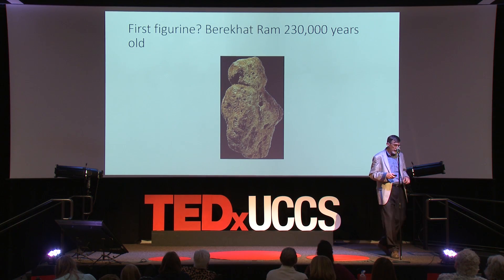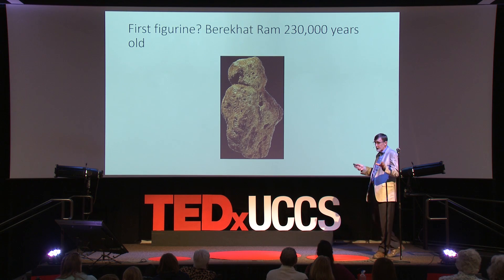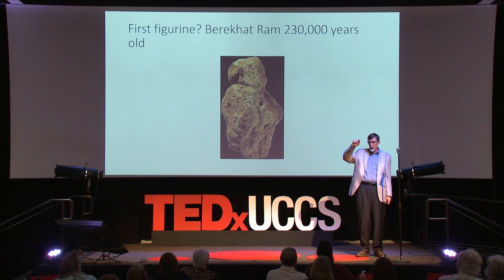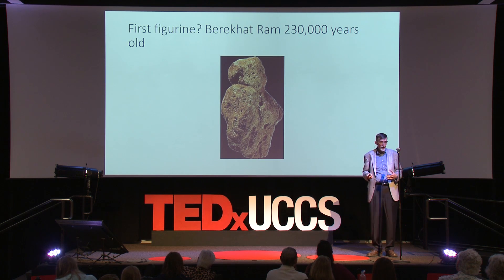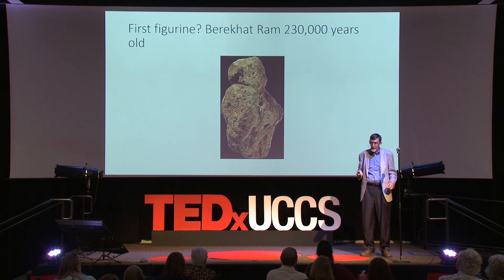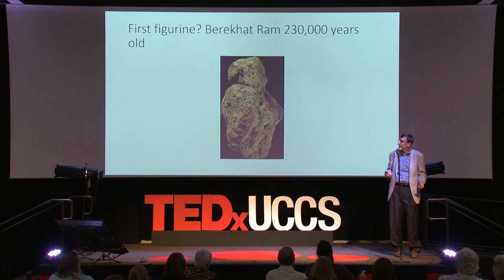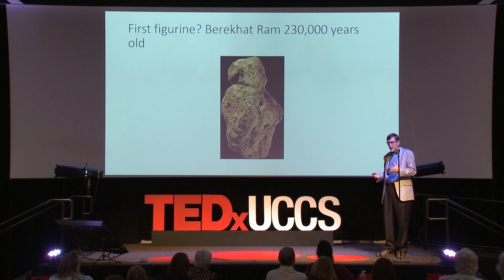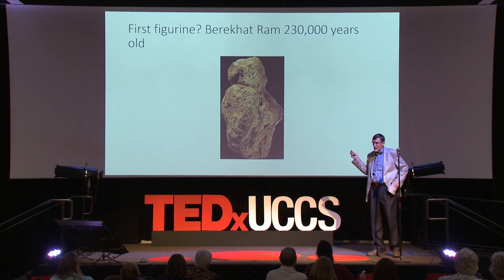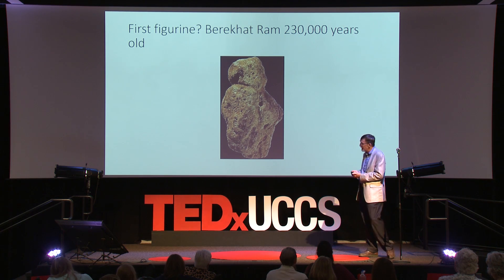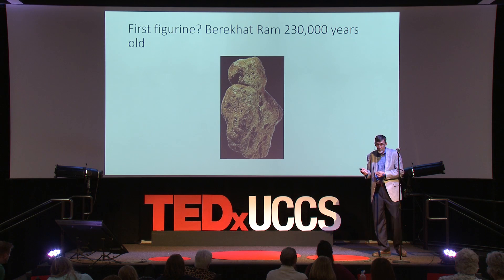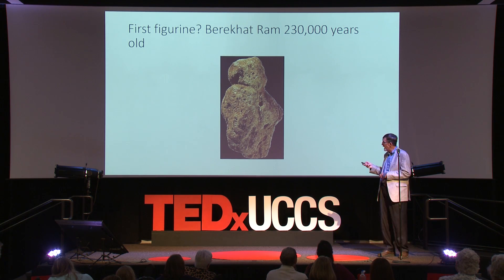This is a fairly famous artifact in paleoanthropology — if you go to the Israeli museum you can look at it on display. It's about an inch long, so this image is much exaggerated. Can you see the woman? When I show this to my introductory classes, half the people raise their hand, and then I ask engineers — none of them raise their hands. This is arguably the oldest humanoid sculpture in the world, from Barakat Ram, 230,000 years old. It's a modified object — you can see microscopically the scratches used to produce it.